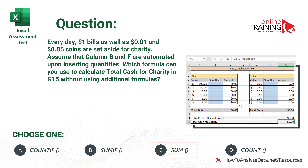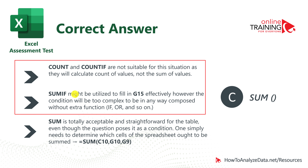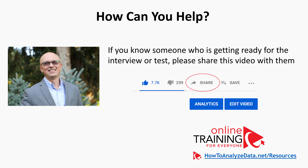There is nothing wrong with using just the SUM function. COUNT and COUNTIF are not suitable because they calculate count of values, not the sum. SUMIF could potentially be used but would be too complex. Using SUM is totally acceptable and straightforward. The correct answer is Choice C — SUM — and it's the simplest choice possible. Sometimes you have to use the simplest choice to answer correctly. If you know someone getting ready for an interview or Excel assessment test, please share this video with them.